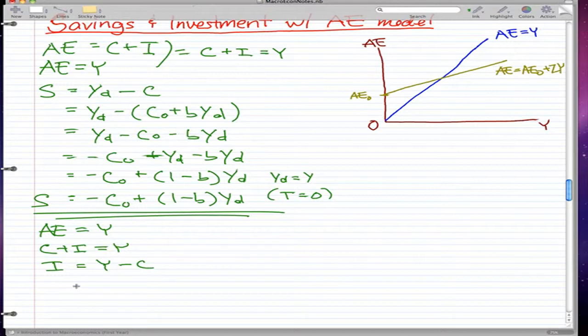Now, we know that YD, or YD is equal to Y when T equals zero, right? This applies here too. So what will happen is I will get I equals YD minus C.